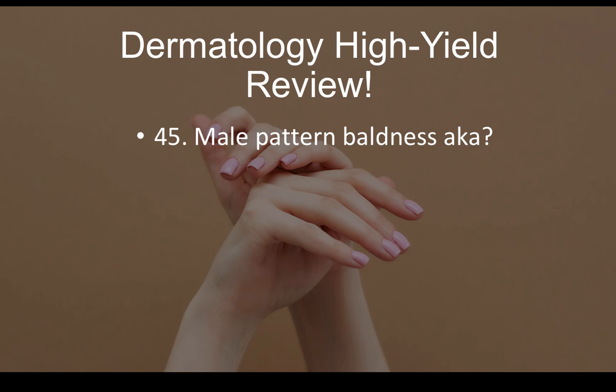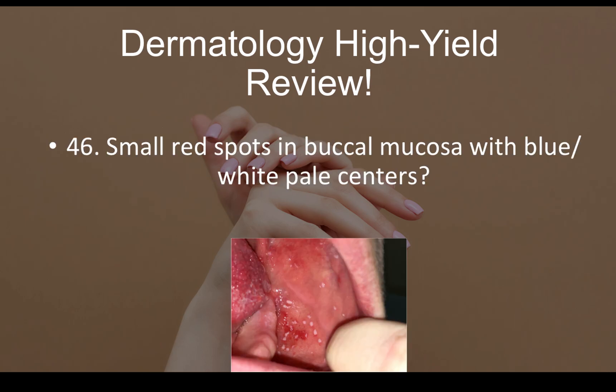Question number forty-five: male pattern baldness is also known as androgenic alopecia. Question number forty-six: small red spots in the buccal mucosa with blue-white pale centers should make you think of Koplik spots. If you see those spots in the buccal mucosa, think Koplik spots.